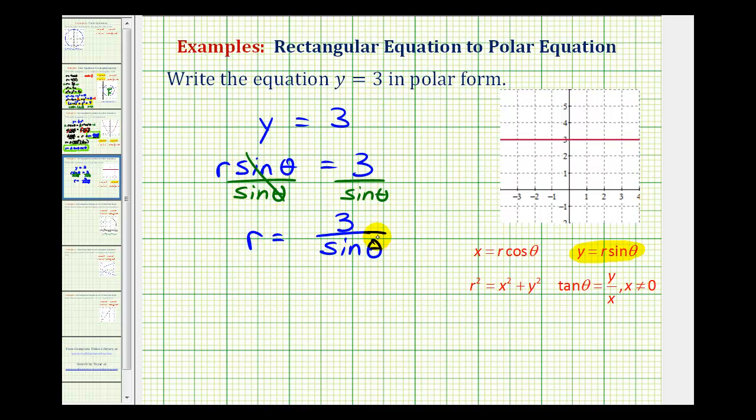But we can also write this in a different form. We could write this as r equals 3 times 1 over sine theta. And the reason we might want to do this is we know that 1 over sine theta is equal to cosecant theta. So we can write this as r equals 3 cosecant theta, so that our equation does not contain a fraction.